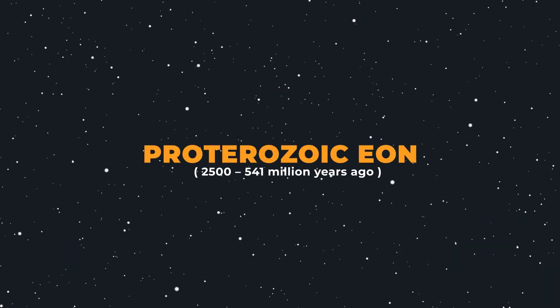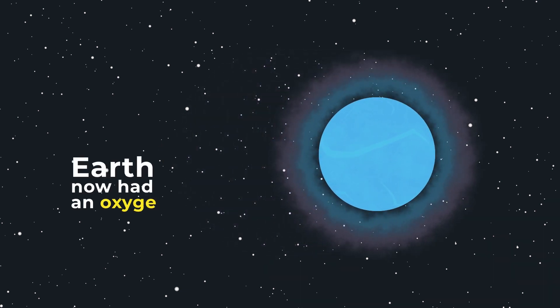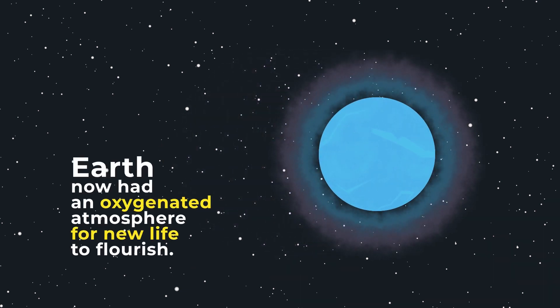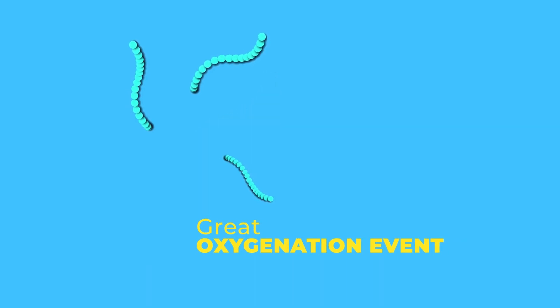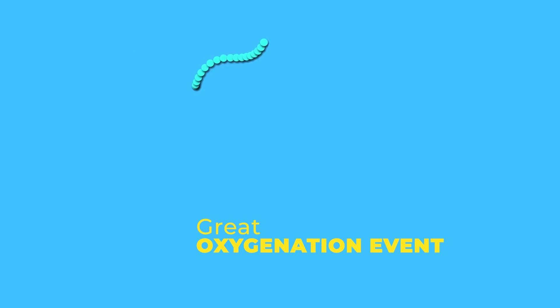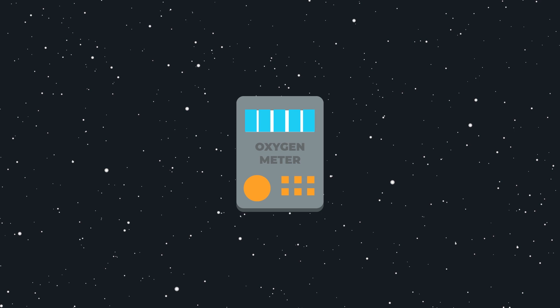The Proterozoic Eon. In this period, the Earth had an oxygenated atmosphere for new life to flourish. But it wasn't cyanobacteria flourishing — because oxygen was toxic for cyanobacteria, they poisoned all anaerobic life on Earth, including themselves. Imagine a dominant species polluting the planet until extinction. The oxygen byproduct from cyanobacteria created an oxygen crisis on the Earth.